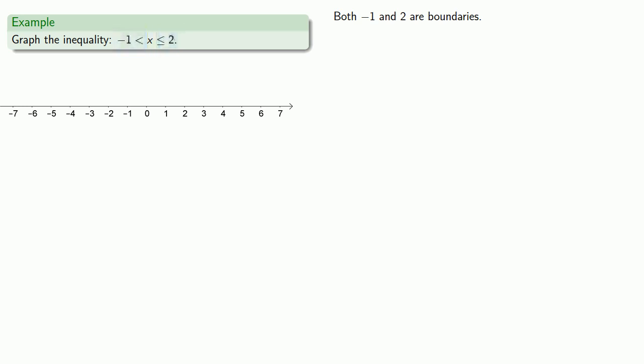Let's take a look at them separately. Since negative 1 is less than x, we have to exclude negative 1 and use an open circle there. On the other hand, since x is less than or equal to 2, we include 2 and use a closed circle there.